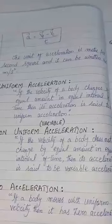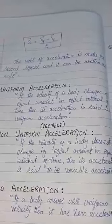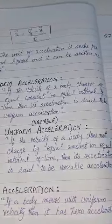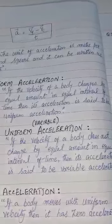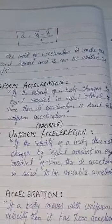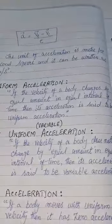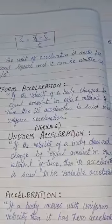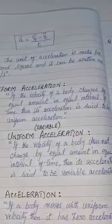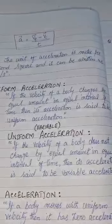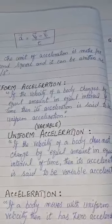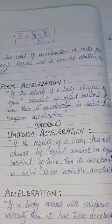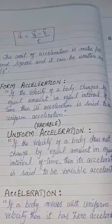Number 2: Uniform acceleration. If the velocity of a body changes by equal amounts in equal intervals of time, then its acceleration is said to be uniform acceleration.